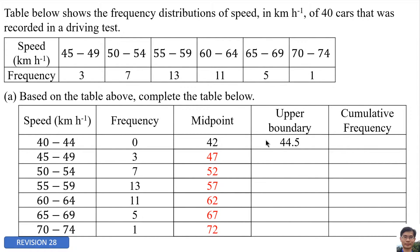Upper boundary is 44 plus 45 and then divided by 2. However, we can see it this way: 44.5 is the same as 44 plus 0.5. So the next one is 49.5, 54.5, 59.5, and so on. Cumulative frequency...